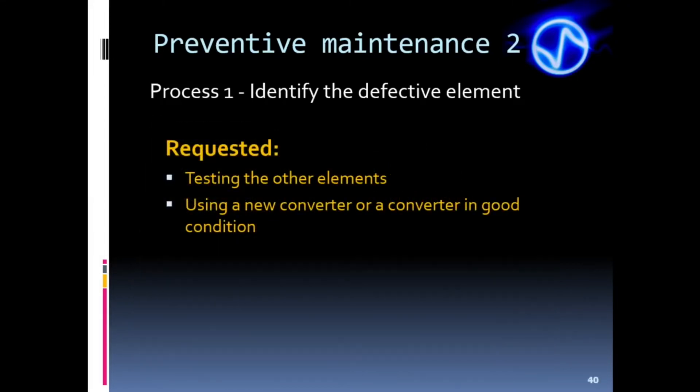Even when identifying that the converter is defective, we must also test the other elements, which may be damaged as well. For testing the other elements, it is necessary to use a reference converter. It might be a converter that is working properly and passed at the basic TRZ criteria, but a new converter is the ideal.